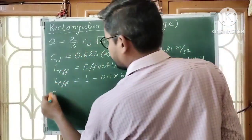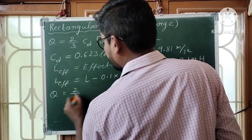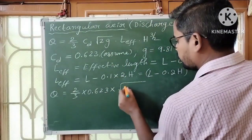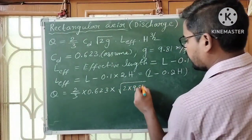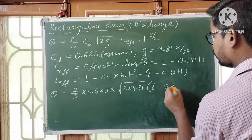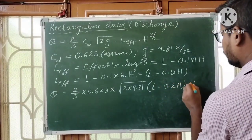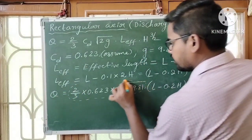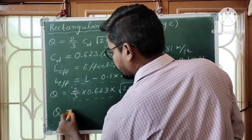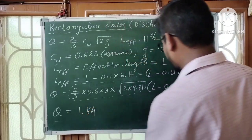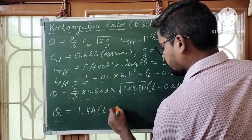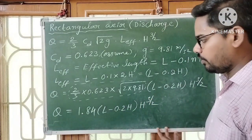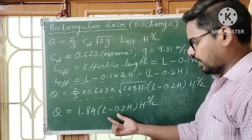Substituting all values: Q is equal to 2/3 into cd value 0.623 into root over 2 into 9.81, into L_eff which is L minus 0.2H, into H power 3/2. Calculating this expression, you will get Q approximately equal to 1.84 into L minus 0.2H into H power 3/2. This formula is called the Francis formula.